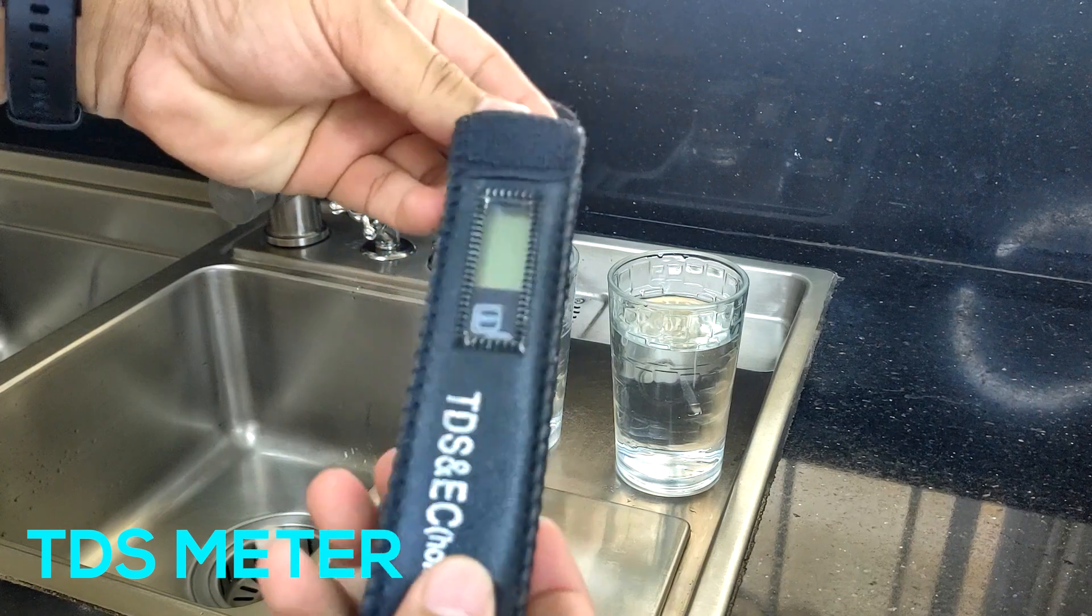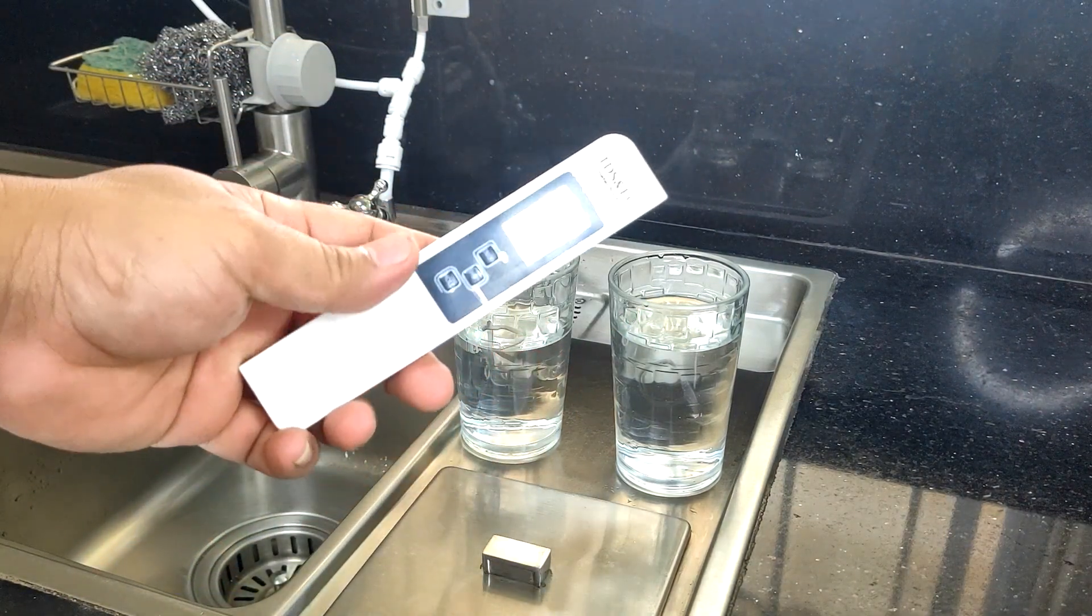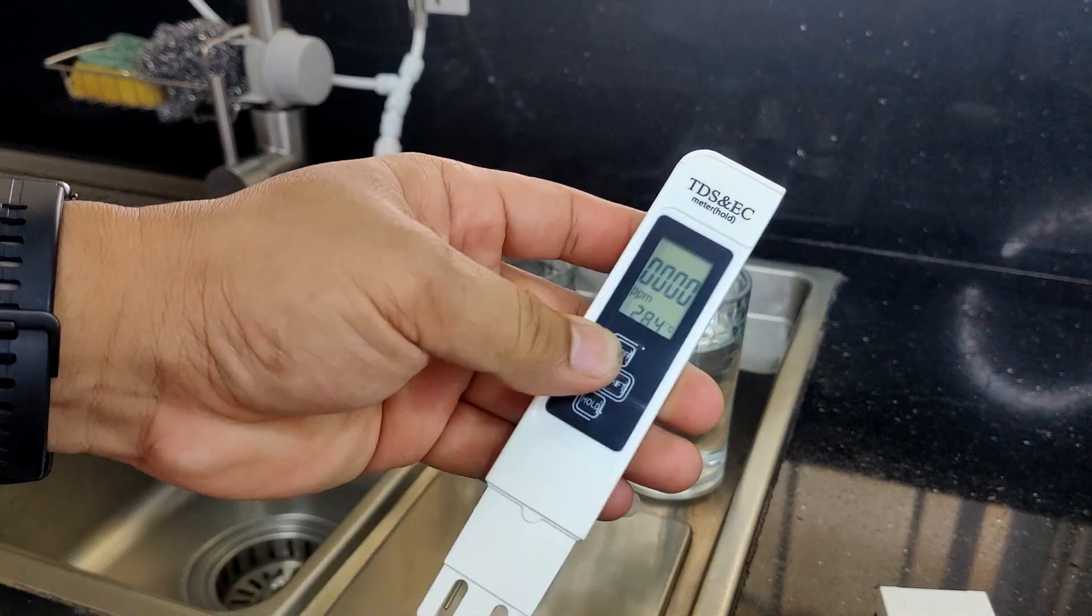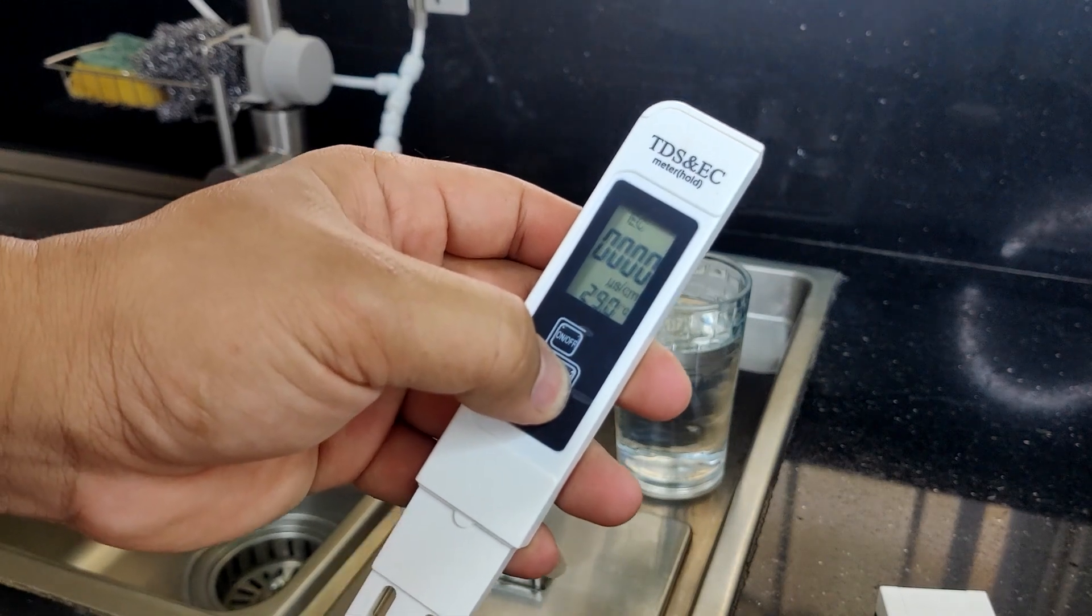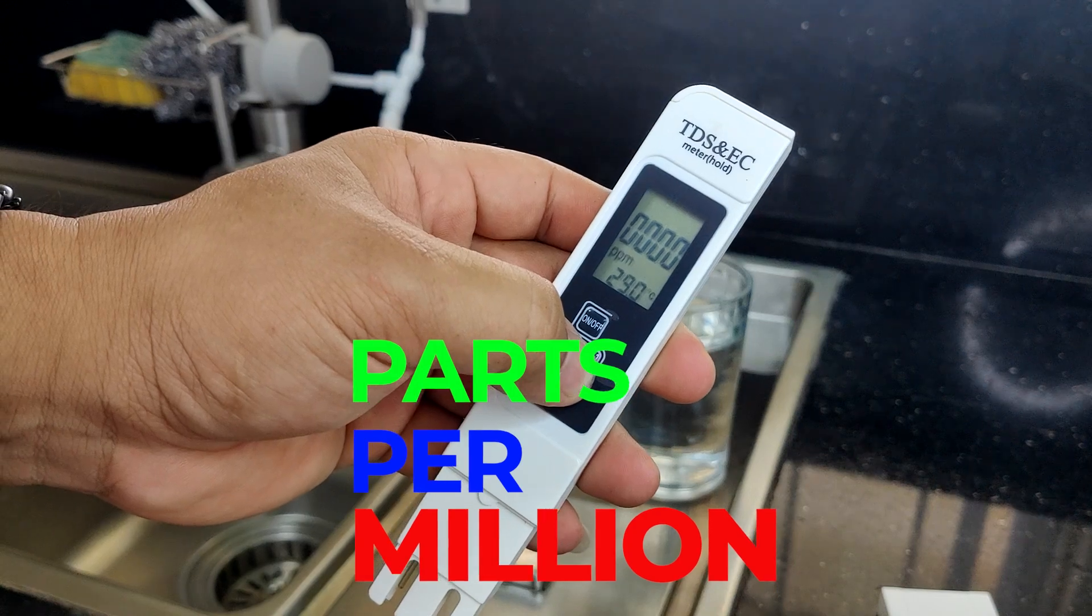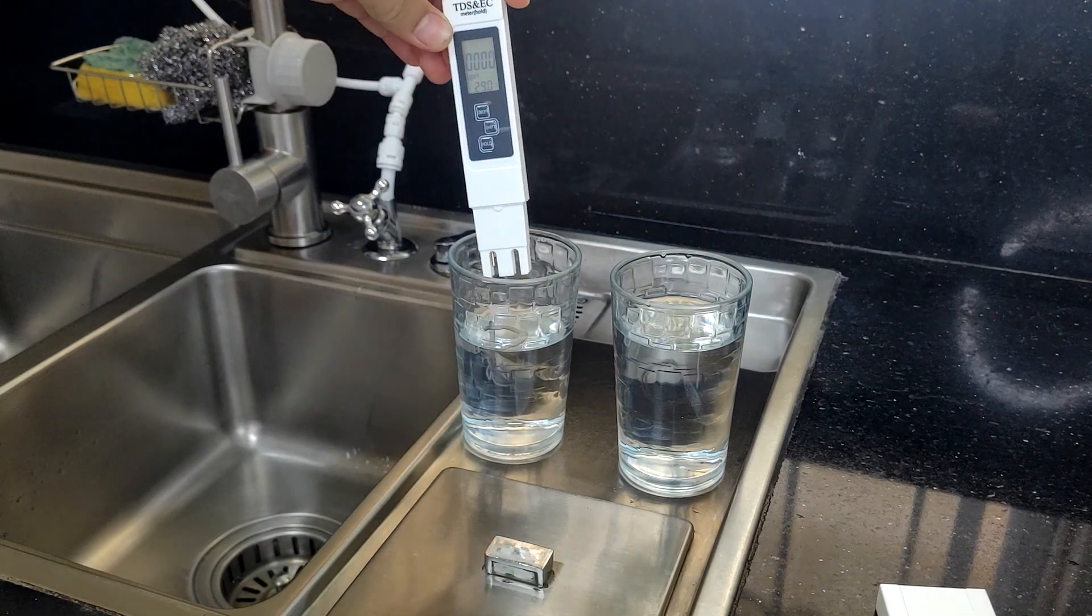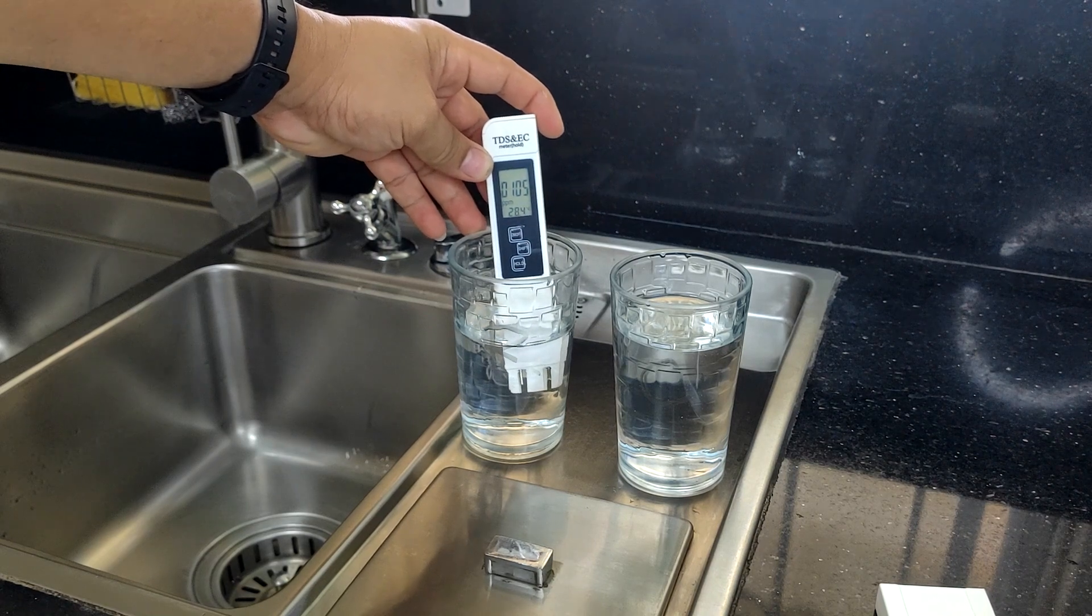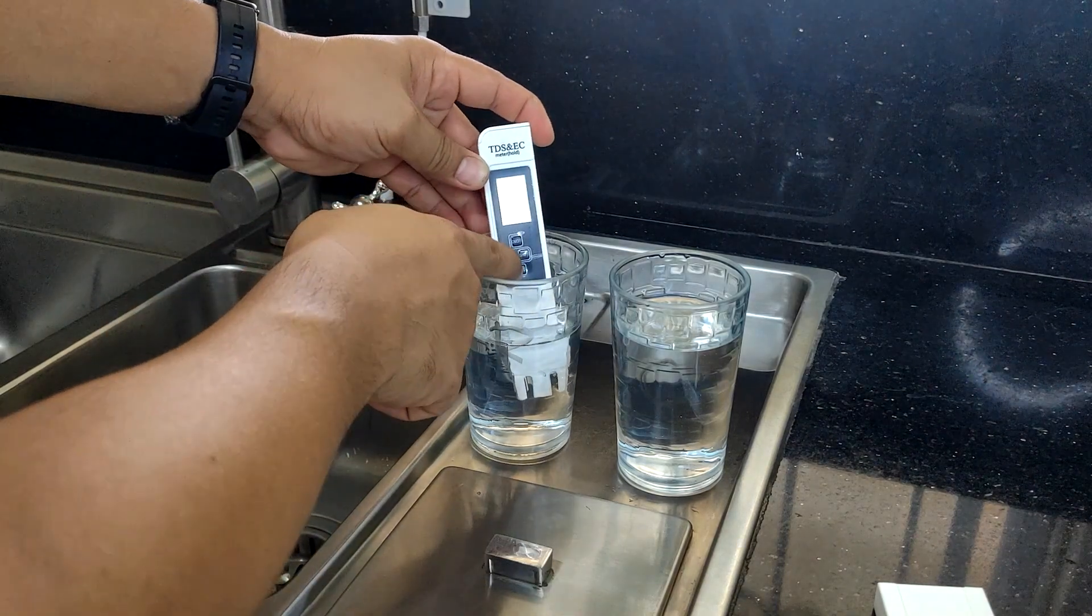What I have here is a TDS meter. This tester determines the solids by measuring conductivity of water, and this is very easy to use. First press power, then select unit to ppm. PPM stands for parts per million, and then soak probes in the sample water. Now let's start with the raw water. As we can see, we got 105 ppm. Not bad for tap water. Press hold button to lock the reading.